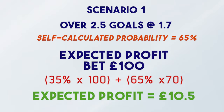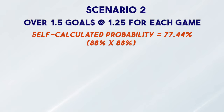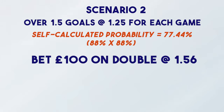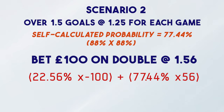What I'm going to show you in scenario two is that you can insure yourself better by backing two games at lower odds with higher probability. Here, the expected profit of a 100-pound bet on a double — a mini accumulator with both games finishing over 1.5 goals at odds of 1.25 each — brings the double to combined odds of 1.56. There is a 22.56% chance you lose your 100 pounds and a 77.44% chance you make 56 pounds profit.